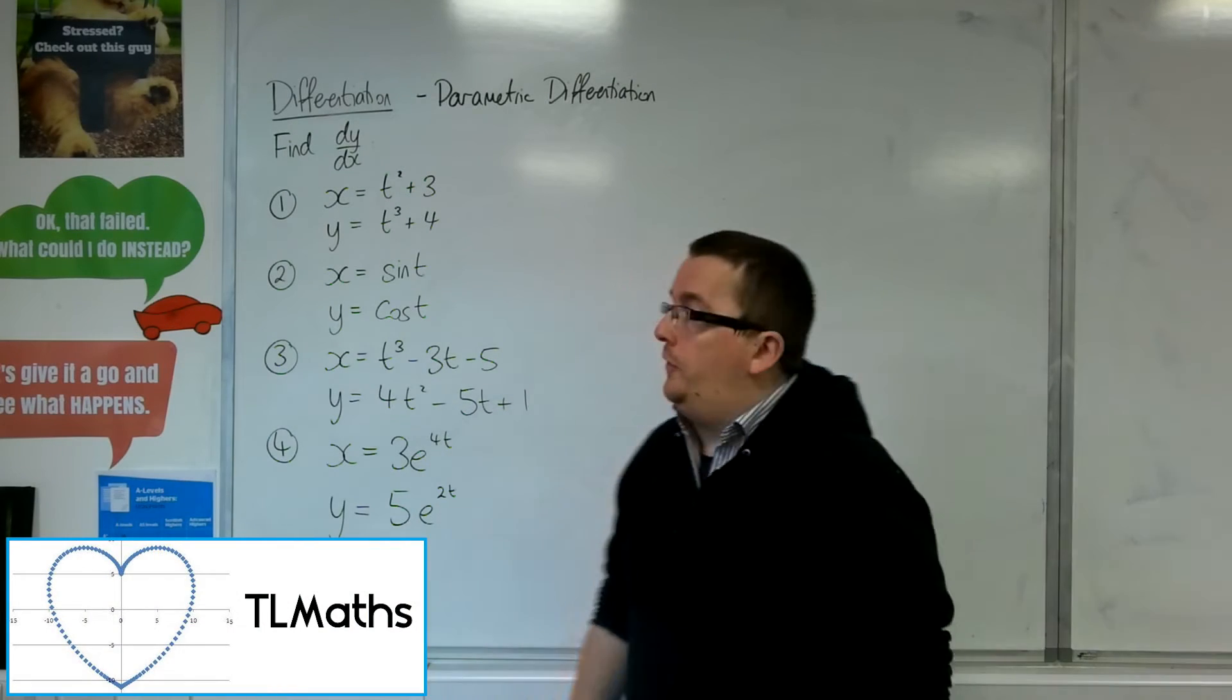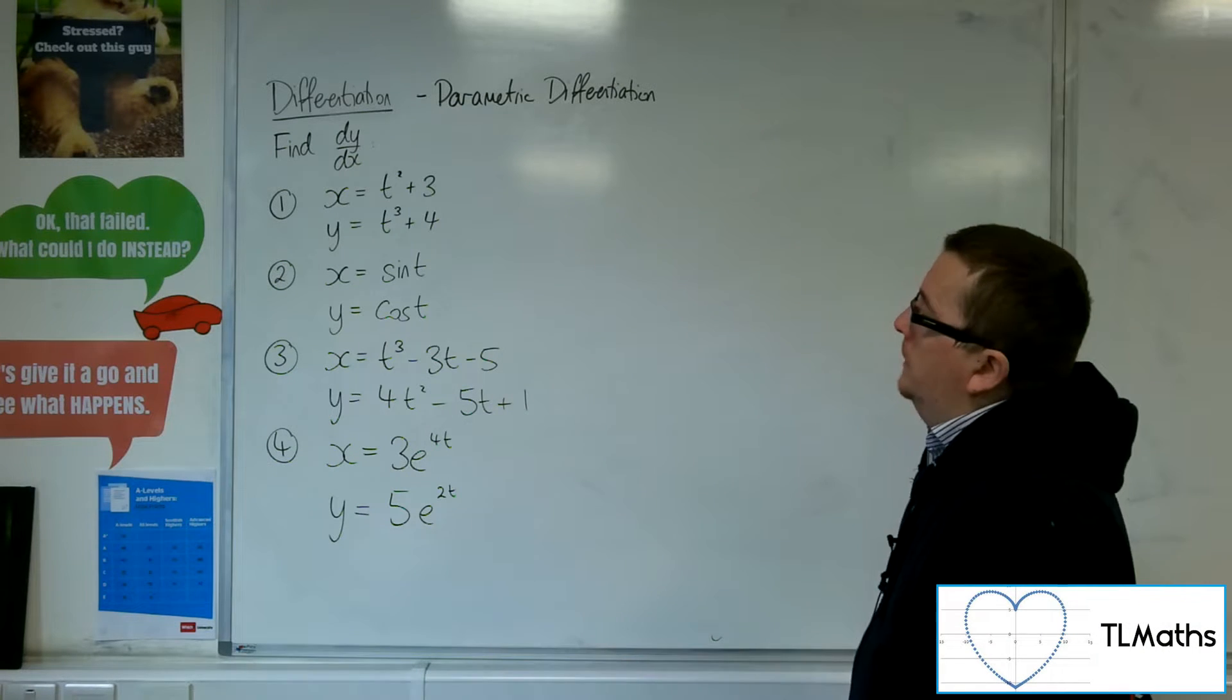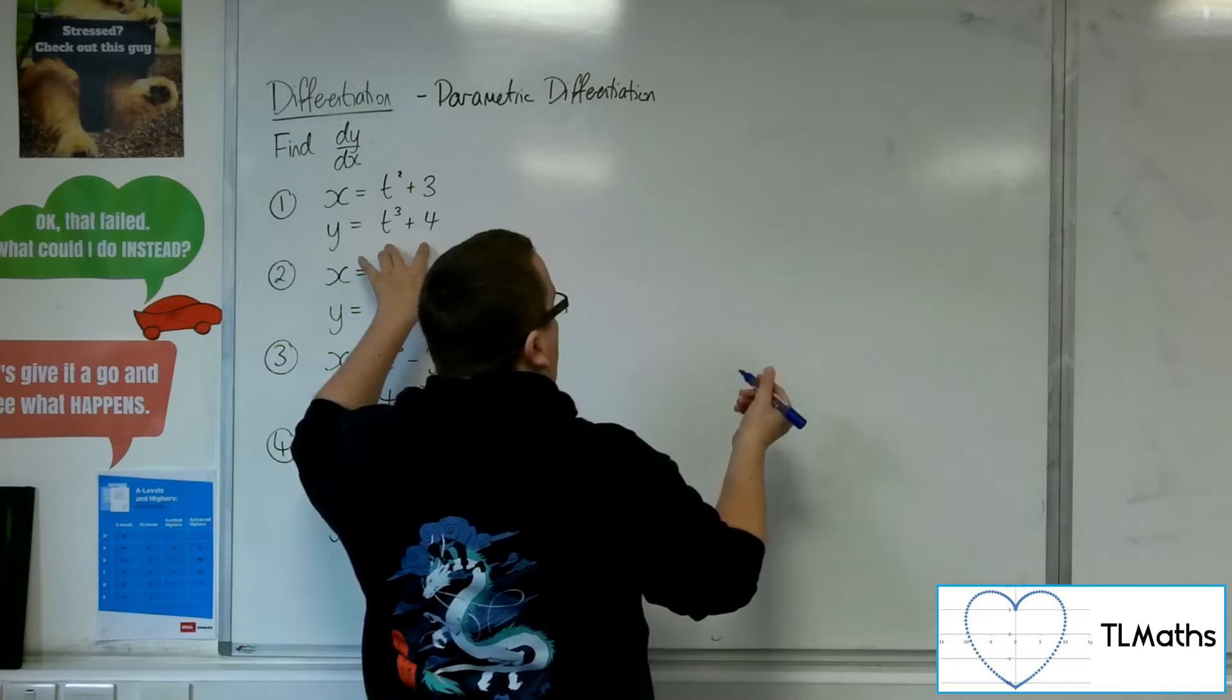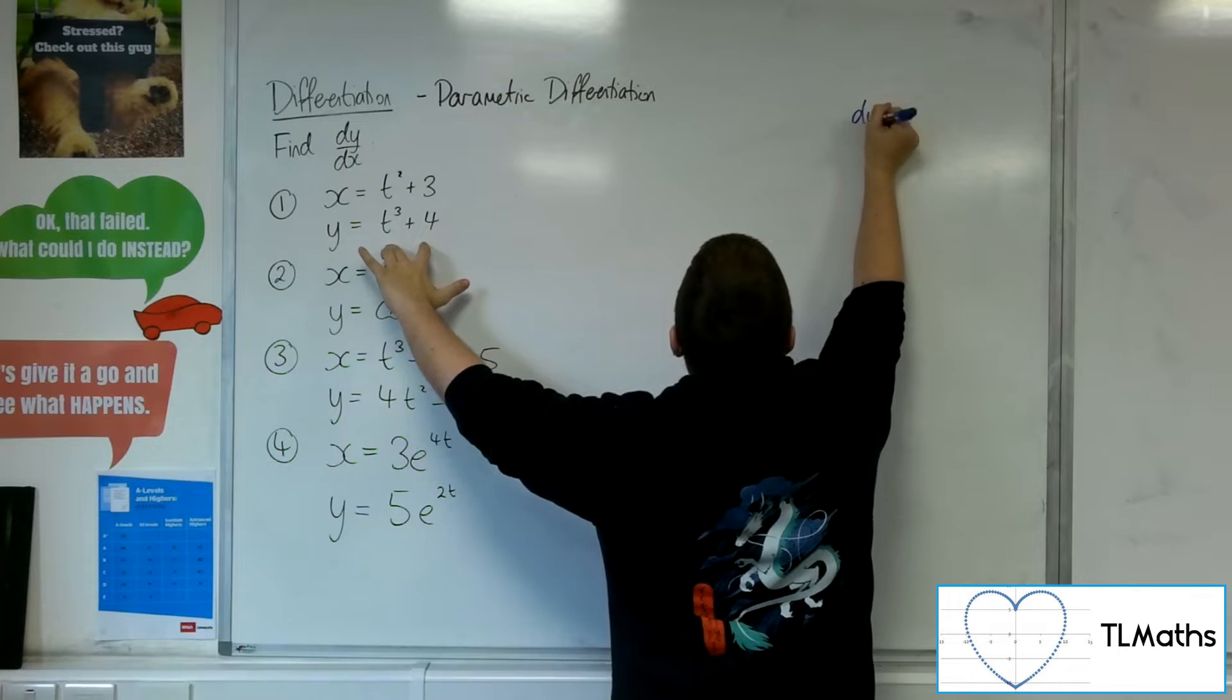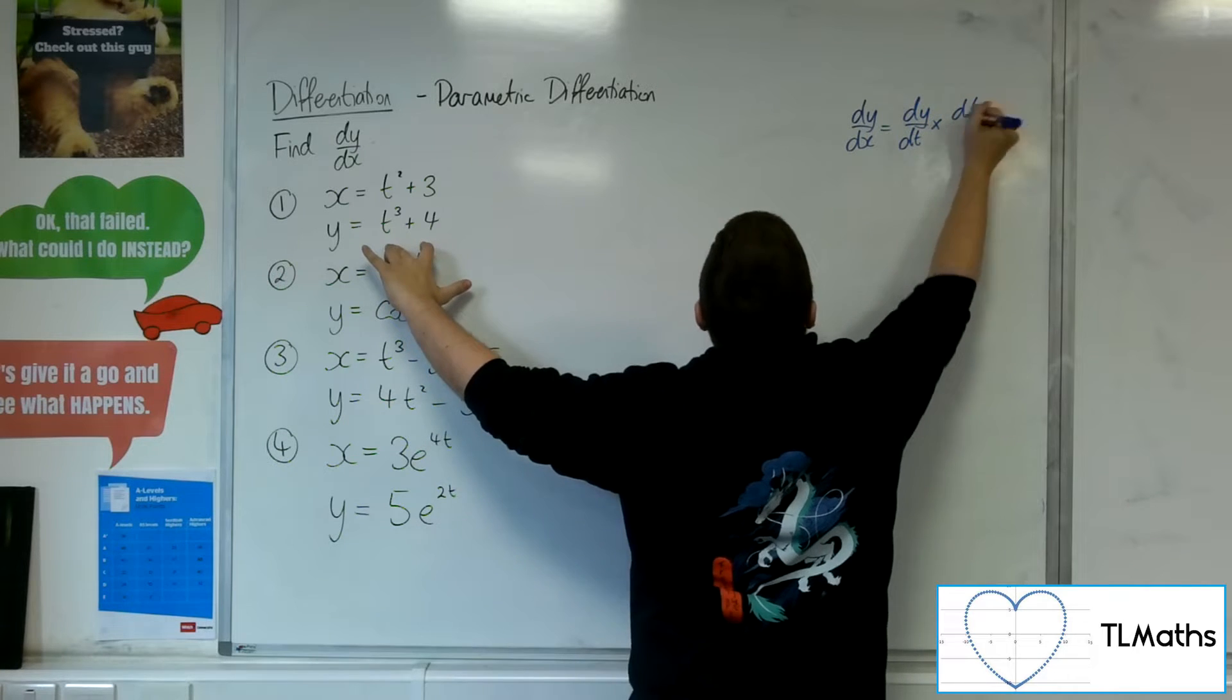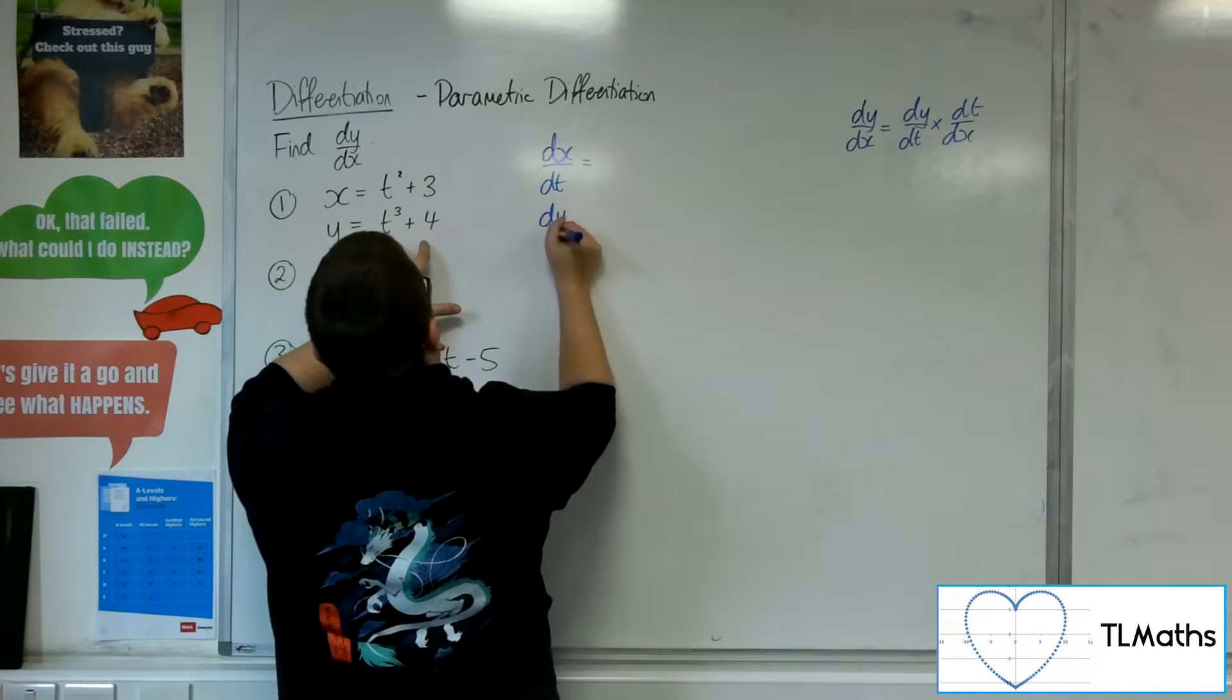In this video we're going to go through some examples of finding dy by dx for these parametric equations. So for this first one, remember what we need to do is to find dy by dx using the chain rule. So dy by dx is dy by dt times by dt by dx. So I'm going to need to find dx by dt and dy by dt.